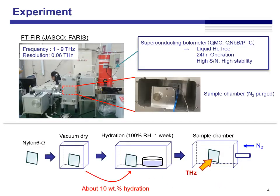The experiment is very simple. We just measured the sample by FTFIR combined with a superconducting bolometer. This is a liquid helium-free system, so we can measure samples 24 hours, 7 days. The sample was prepared as follows: we prepared a Nylon 6 alpha-film, vacuum dried it, and put it into the hydration chamber. After one week, the sample absorbed about 10% water molecules. Then the sample was put in the measurement chamber and we continuously measured terahertz absorption spectra. The sample chamber was purged by nitrogen gas, so the sample was dried out over time.